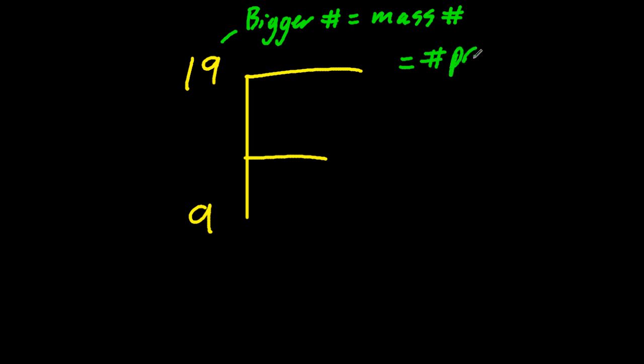We'll choose fluorine as our element, the most reactive element on the periodic table. One sniff will melt your face off. All right, so the bigger number is the mass number, but that can't be your definition. The mass number definition is the number of protons plus the number of neutrons in an atom.